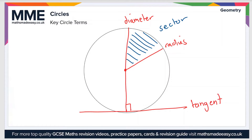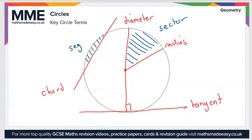If you have a line cutting across a part of the circle but not going straight through the middle of it, this is known as a chord. The area inside the chord and the edge of the circle is known as a segment.